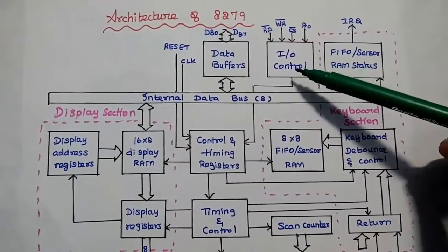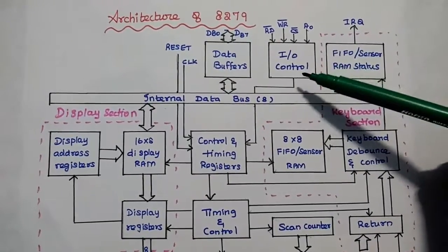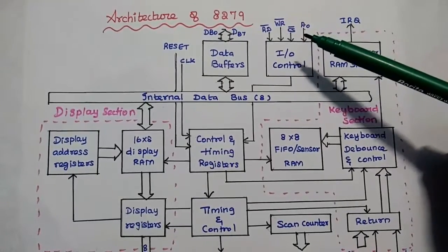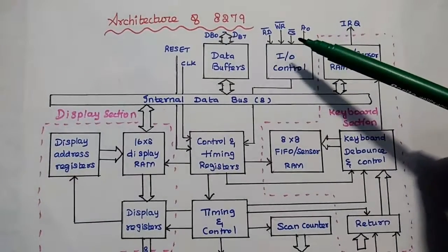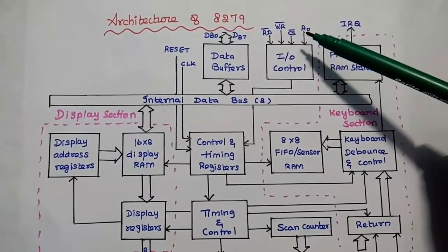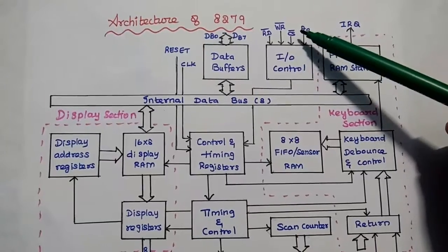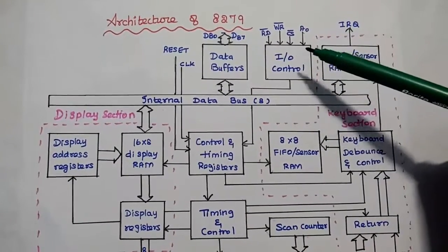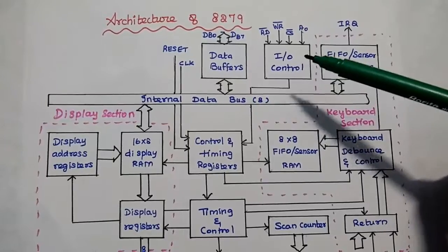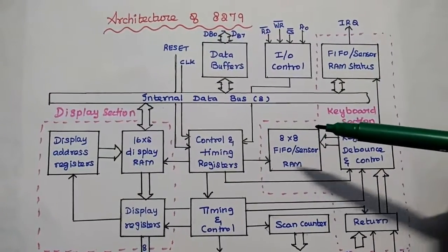The next one is the I/O Control — that is the input-output control unit. It has 4 input control signals from the processor: read bar, write bar, CS bar, and A0. Here A0 is the address line from the processor, and CS bar means chip select. These 4 signals are used to control the input and output related operations of 8279.